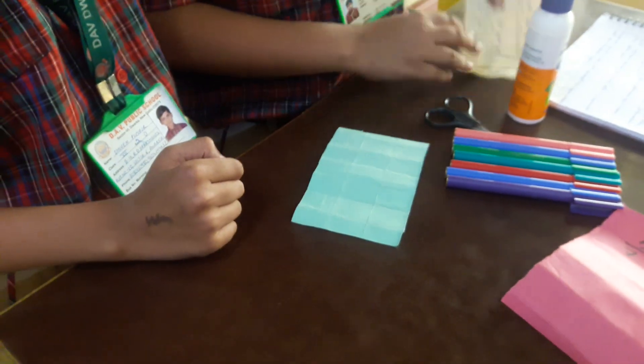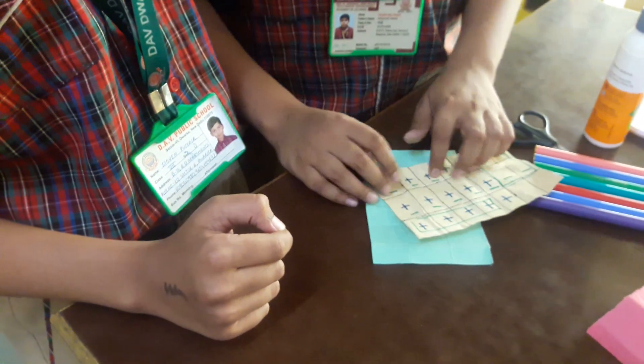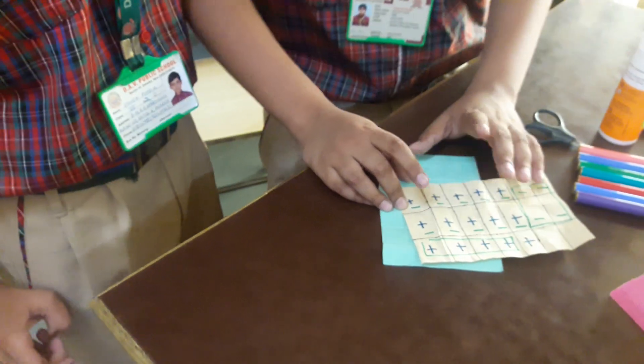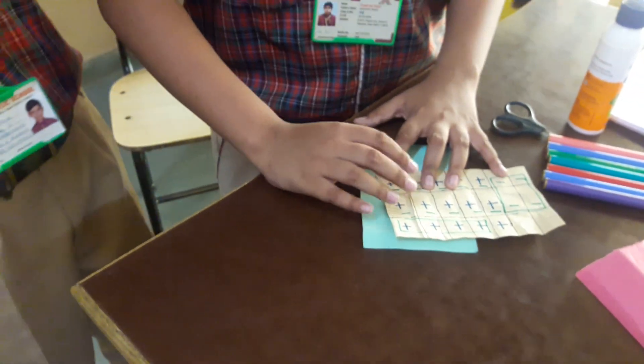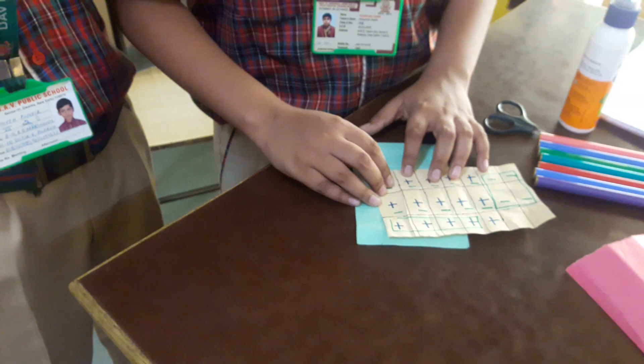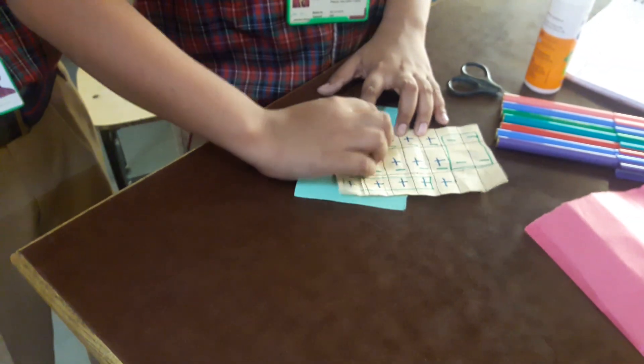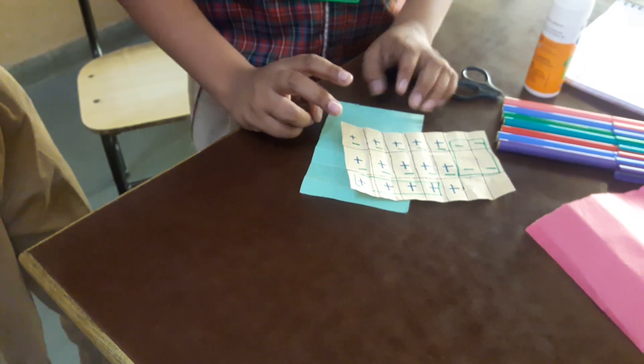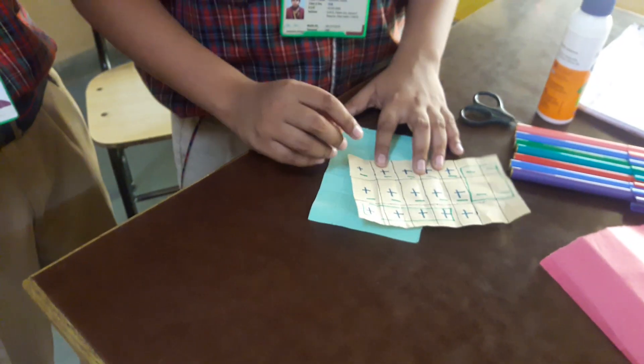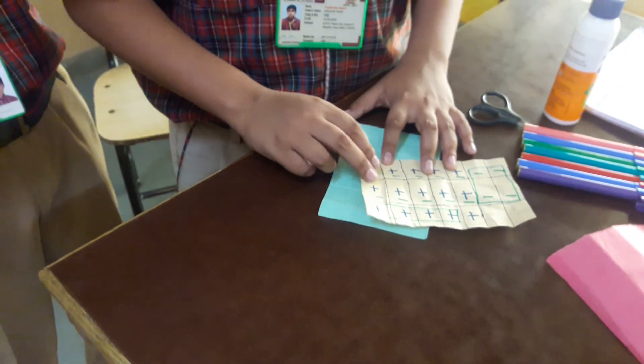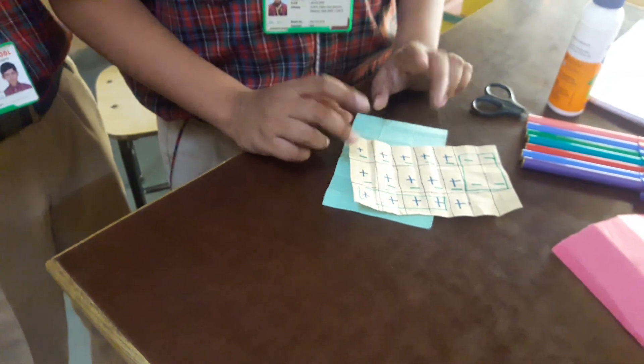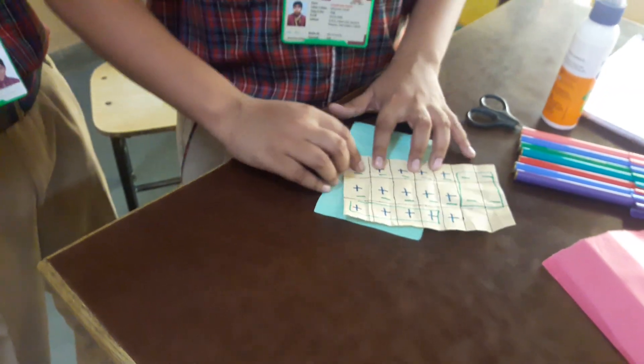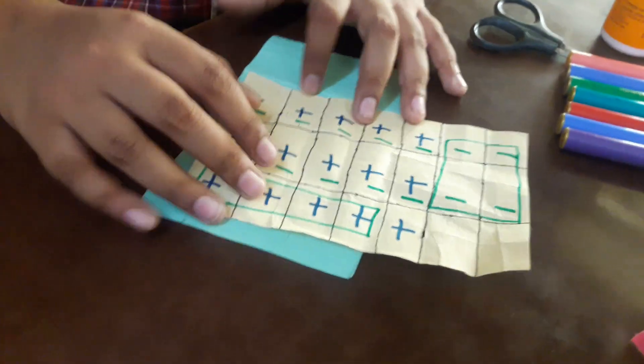Then we will mark each square of any 5 columns with plus sign. Then we will mark any 2 rows with negative sign horizontally.